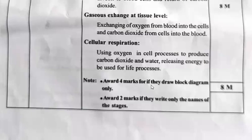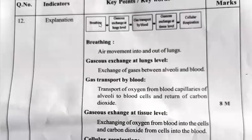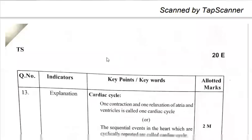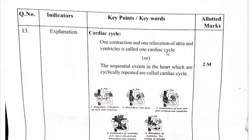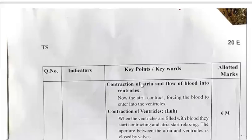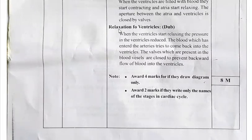Award four marks if they draw the block diagram only. Award two marks if they write only the names of the stages — if they wrote only stage names they get two marks; if they draw the block diagram they get four marks. This whole question is for eight marks. For writing a specific point you get two marks, and for the remaining content, six marks total. For the cardiac cycle diagram: award four marks for diagram only; award two marks if they write only the names of the stages.